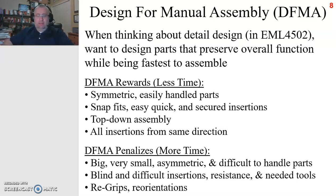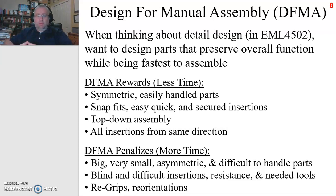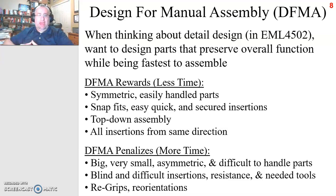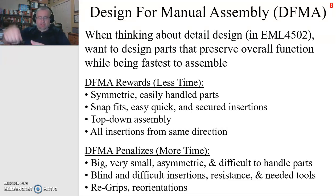DFMA — Design for Manual Assembly — rewards parts and processes that take less time. You're rewarded if parts are symmetrical or easy to pick up, because it doesn't matter what orientation you encounter them in. It also rewards snap fits and easy, quick, secure insertion — where you don't have to hold a part down or screw it in. Top-down assembly is rewarded, where you can pile pieces on top of a subassembly like building a pyramid. Having all insertions in the same direction is also rewarded, so you're not constantly reorienting your subassembly.